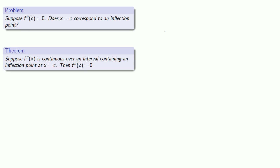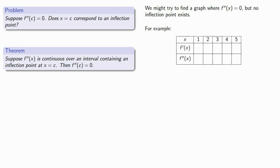Does it work the other way around? Suppose our second derivative is zero — does that give us an inflection point? We might try to find a graph where the second derivative is zero at some point, but no inflection point exists. For example, suppose my second derivative is zero at x equals 3. If I want this not to be a point of inflection, then I need to make sure that the concavity doesn't change — so maybe the second derivative before x equals 3 is positive and the second derivative after is still positive.